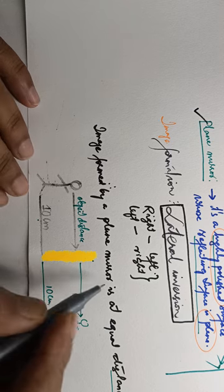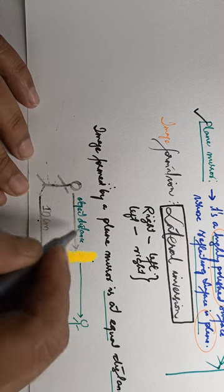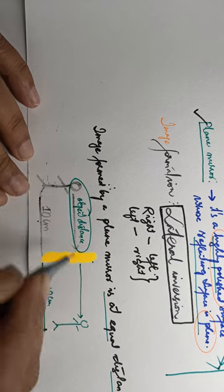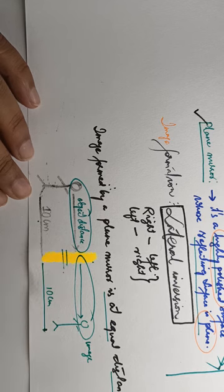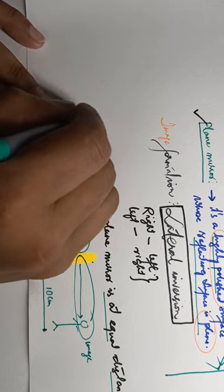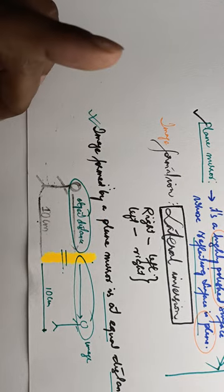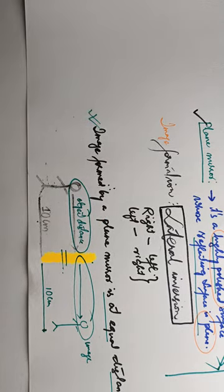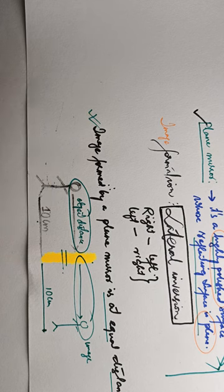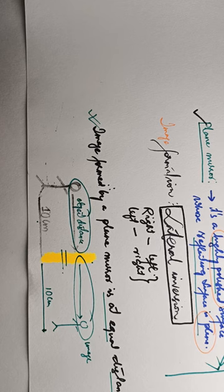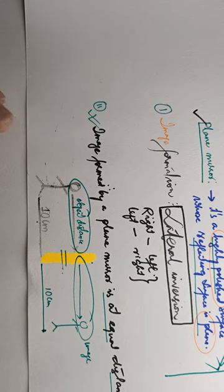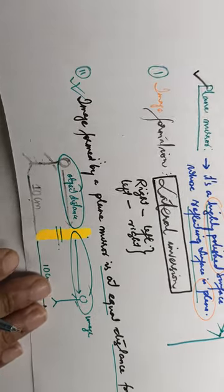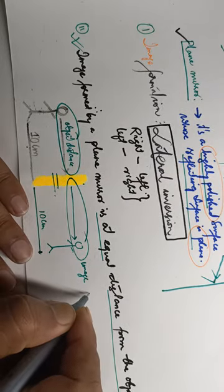So the distance between the object and the plane mirror equals the distance between the image and the plane mirror. Characteristic one: the plane mirror forms a laterally inverted image — the left appears right and the right appears left. Characteristic two: the image formed is at equal distance from the object.